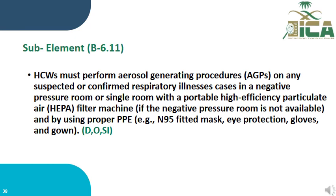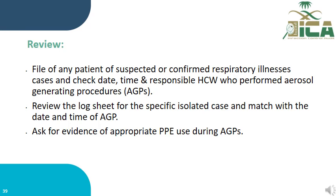P6.11: Healthcare workers must perform AGPs on any suspected or confirmed respiratory illness cases in a negative pressure room, or in a single room with a portable HEPA filter machine if a negative pressure room is not available, and by using proper PPE. Evaluated by documents, observation, and review. Review files of any suspected or confirmed respiratory illness case, check the date, time, and responsible healthcare worker who performed the AGP, review the log sheet for specific isolation cases, and ask for evidence of appropriate PPE use during AGPs.